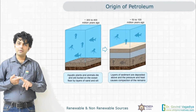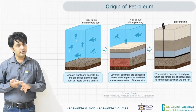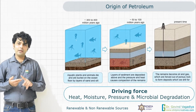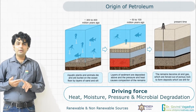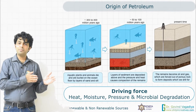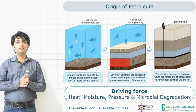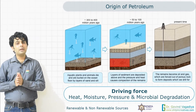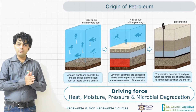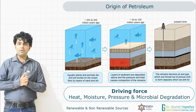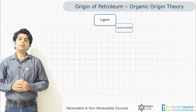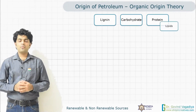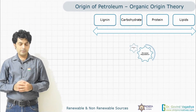This conversion took place over 50 to 70 million years due to heat, pressure, microbial degradation, and the effect of moisture. The chemical conversion produced petroleum, which we can find underneath the earth. This technical diagram illustrates the organic origin theory of petroleum.